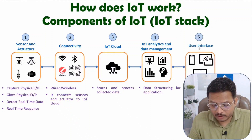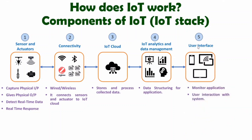The fifth block is the user interface. The user will interact with the application through which they can monitor it. For example, if you have an IoT application where you are staying in India and monitoring your home in Canada, then how the user interacts with the application is defined in this fifth block. So in this way, there are five blocks.